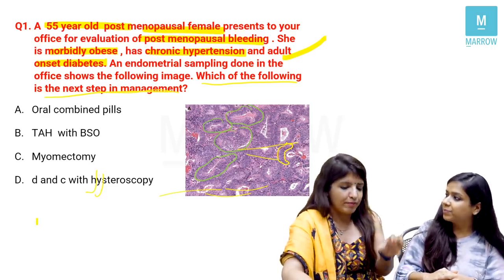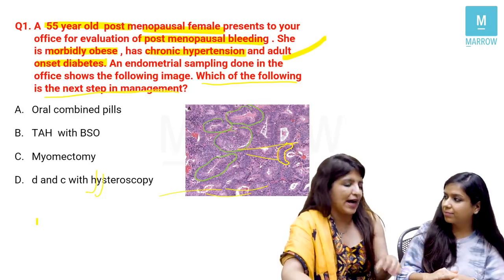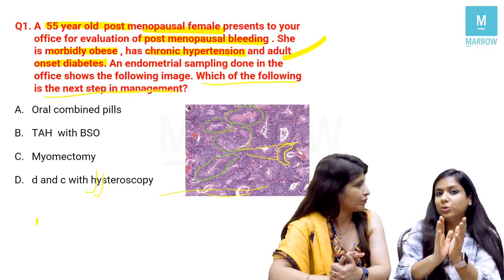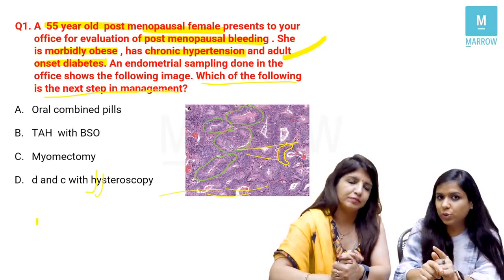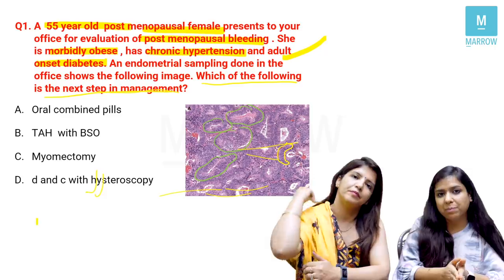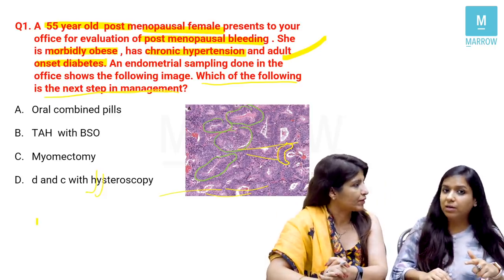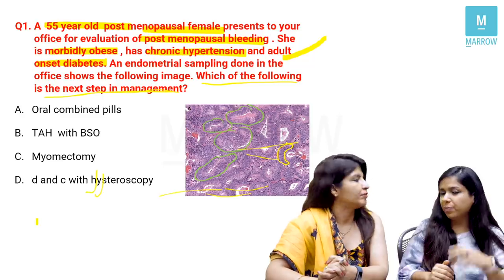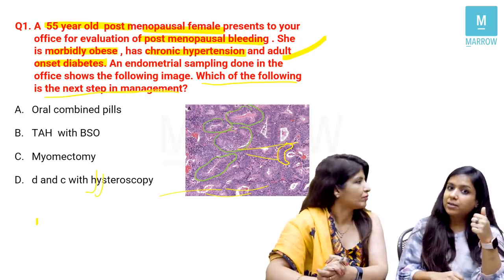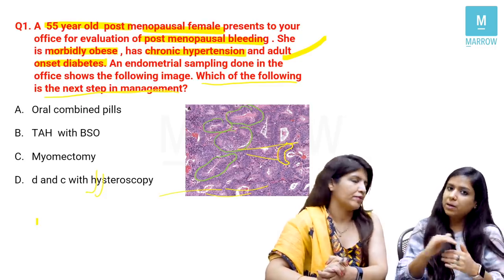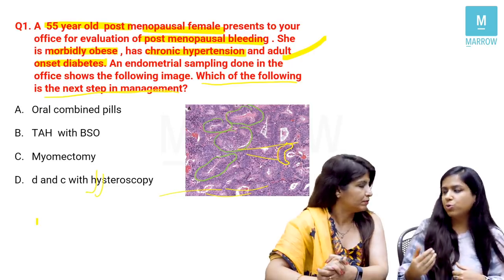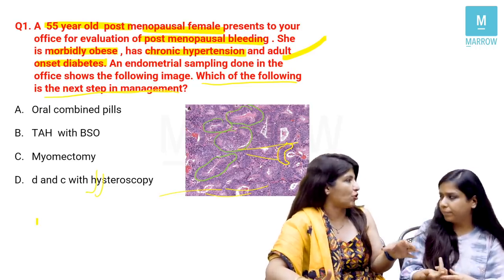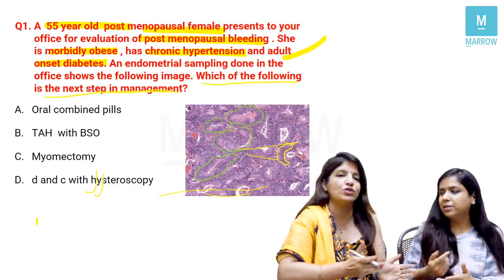Regarding the older classification: simple hyperplasia without/with atypia and complex hyperplasia without/with atypia — this has been replaced. The latest WHO classification divides endometrial hyperplasia simply into typical and atypical. Management is also based only on whether atypia is present or absent — so the simple vs. complex distinction is no longer clinically relevant.